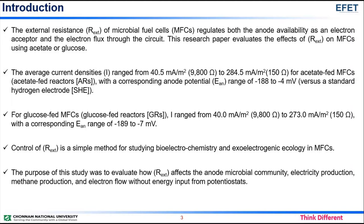For glucose-fed MFCs, the average current densities range from 40.0 mA/m² to 273.0 mA/m², with a corresponding anode potential range of minus 189 to minus 7 millivolt. Control of external resistance is a simple method for studying bioelectrochemistry and exo-electrogenic ecology in MFCs. The purpose of this study was to evaluate how external resistance affects the anode microbial community in terms of electricity production, methane production, and electron flow without energy input from potentiostats.